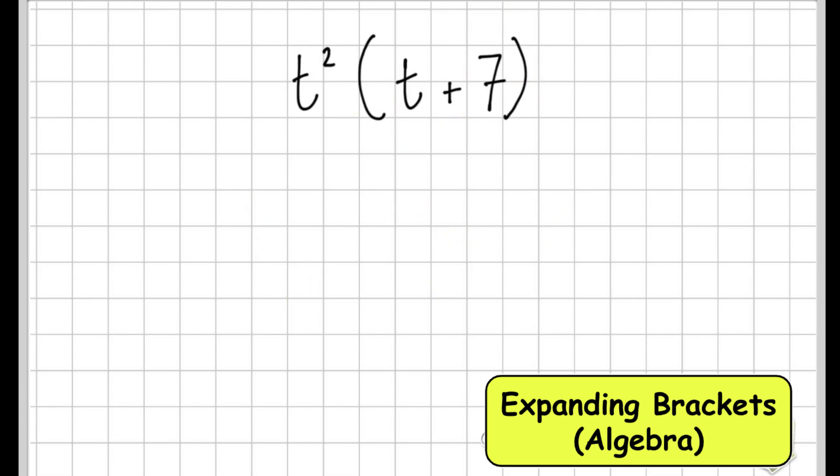Now we have our first question that has a squared number outside of the brackets but not to worry. I'm going to multiply t² by the t here. So if we have a squared number and we're multiplying it by just a regular letter then that makes t³. Easy.